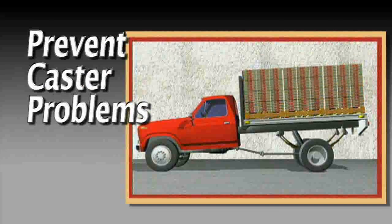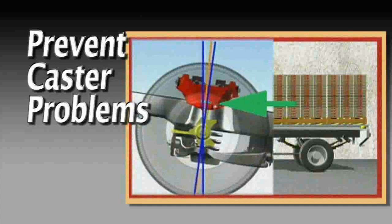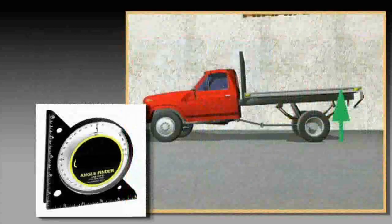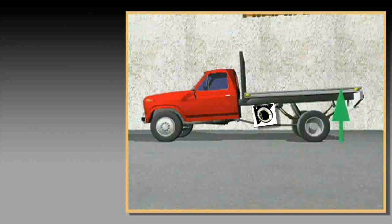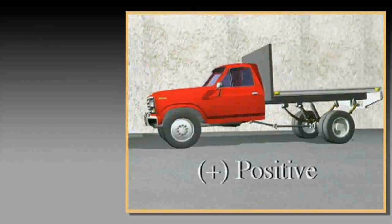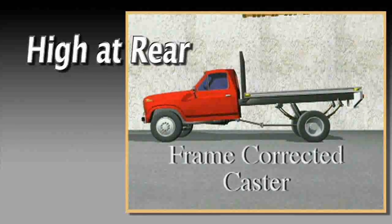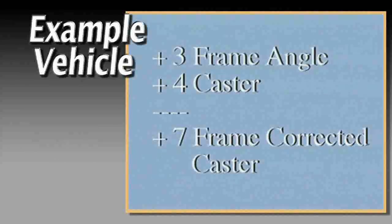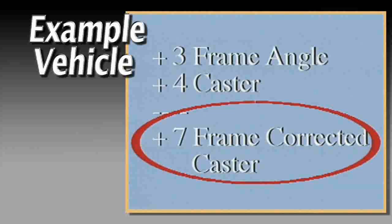To prevent caster from moving too far positive, the manufacturer may specify adjusting the initial caster measurement to a frame-corrected caster angle. To do this, measure frame angle with a protractor. If it's positive, or high at the rear, add that amount to the measured caster to compute frame-corrected caster. Since our example vehicle has three degrees positive frame angle and four degrees caster, the frame-corrected caster is seven.